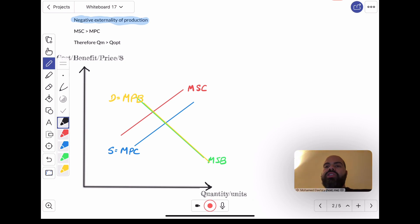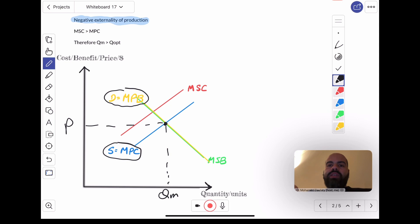Remember, the intersection of the MPB and the MPC, this one over here, will give us QM, the quantity produced by the market, and PM, the price charged by the market.